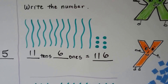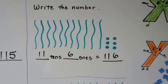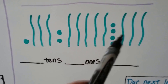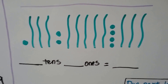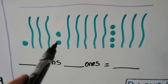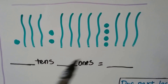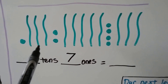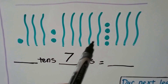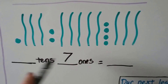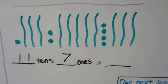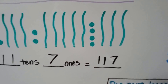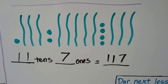Look at this one. The ones are all in different places. We can still count them and group them together. We have 1, 2, 3, 4, 5, 6, 7, 8, 9, 10, 11 tens. What number do we have? We have 11 tens and 7 ones. We have 117.